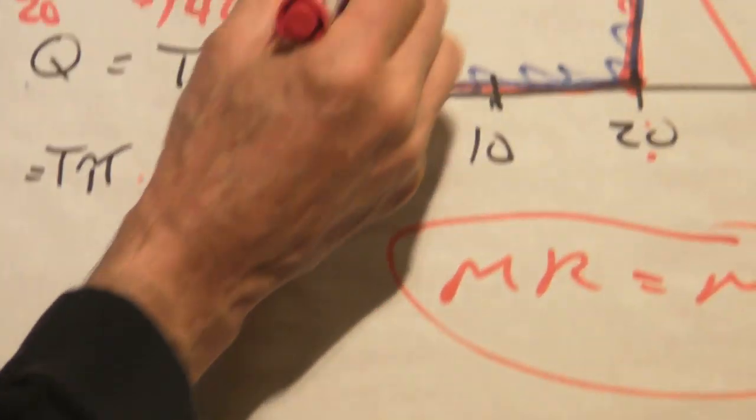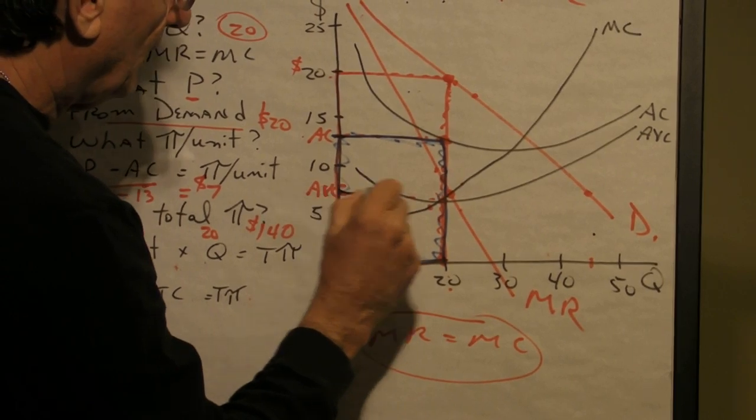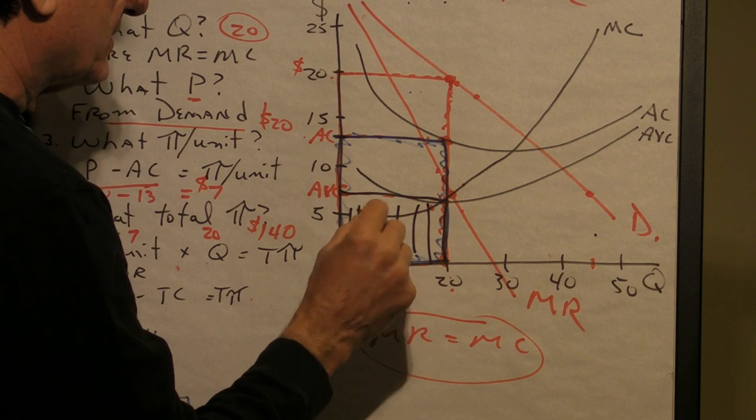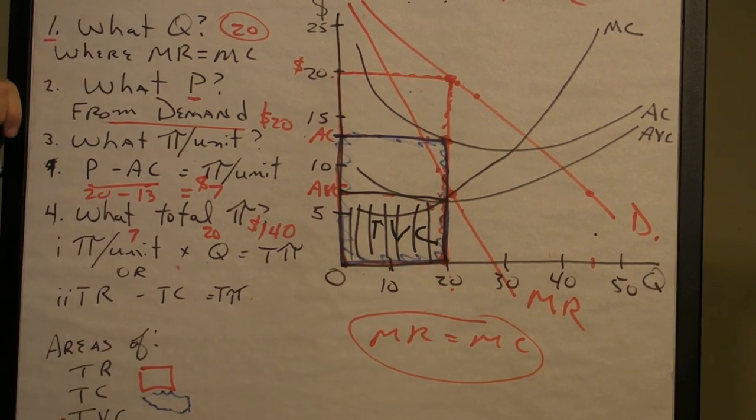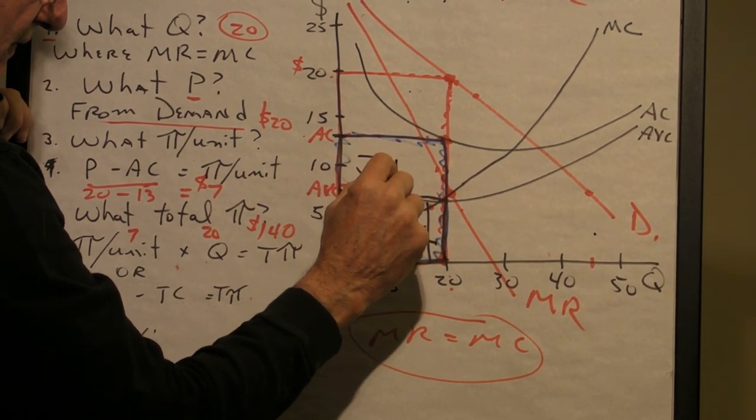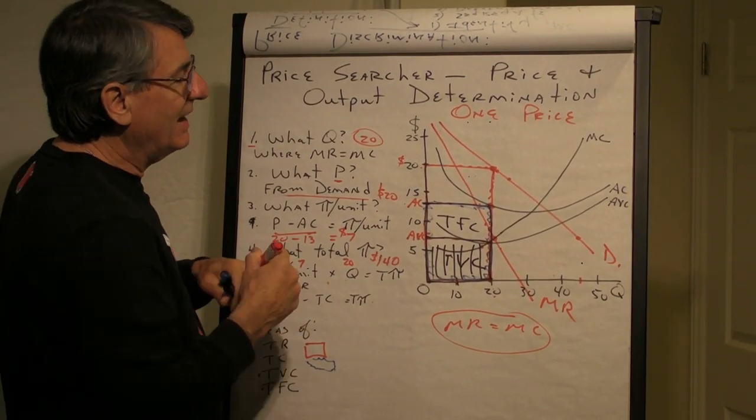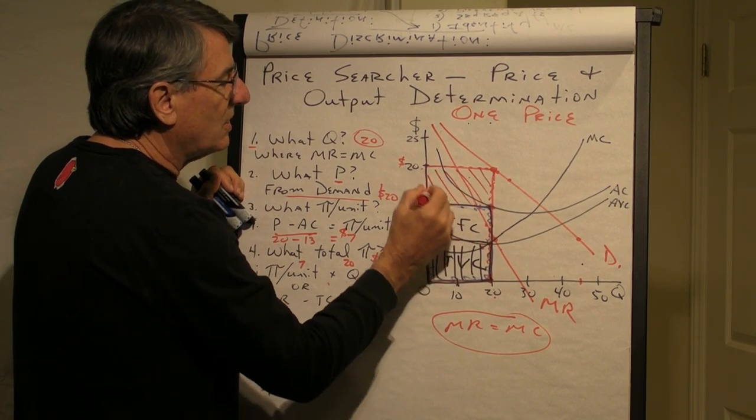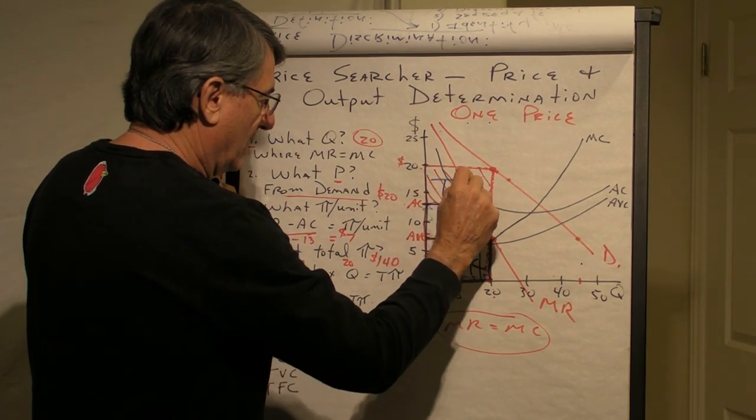So, everything from zero up to the average variable cost, and carried across by the 20 units here, this rectangle represents total variable cost. This top rectangle has to be, then, total fixed cost. These two together are total cost, and then this difference here between total revenue and total cost is total profit.